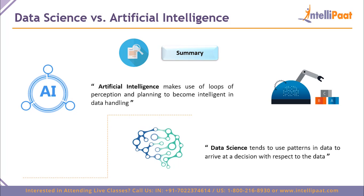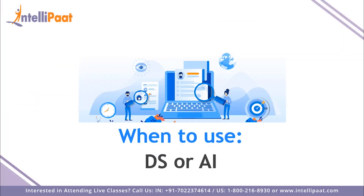To summarize the differences: artificial intelligence makes use of loops of perception and planning to become intelligent in how it handles data. Data science is all about using patterns and trends to reach decisions faster and more efficiently — catching things that might have been missed when looking at the data manually.